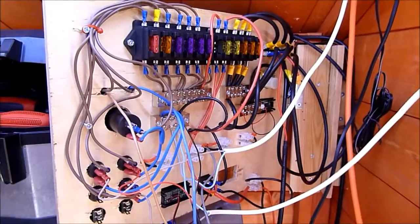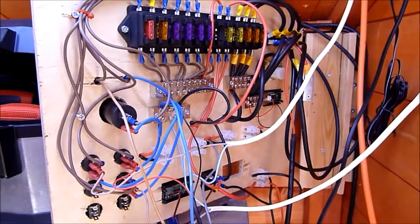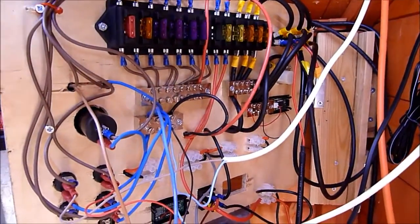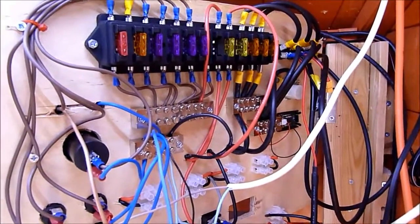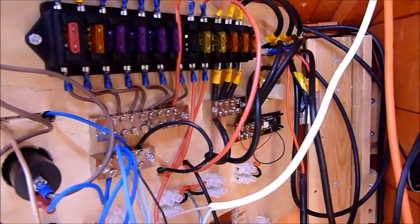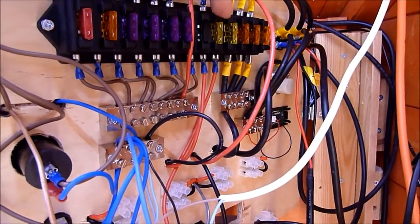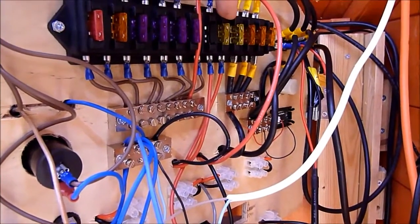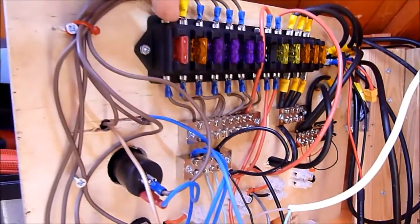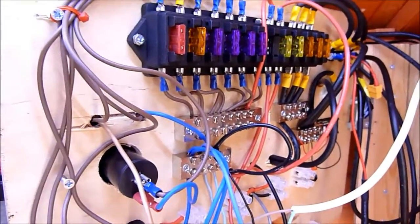As you can see now at the back of my control panel, I've got a 12-way fuse box. I've got my solar panels fused over here, my main battery and load fuses, and then individual fuses for different loads coming off.